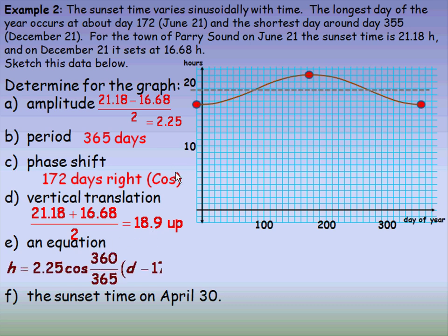To write an equation—I'm only going to write the cosine one for this example—h represents the hour of the day the sun sets and d is the day of the year. The amplitude is 2.25, so it's 2.25 times the cosine. 360 over the period, there are 365 days. The phase shift is 172 days to the right, so d minus 172—remember it's the opposite sign, going to the right it's a minus. The vertical translation is 18.9 up, so plus 18.9.